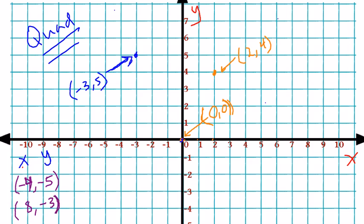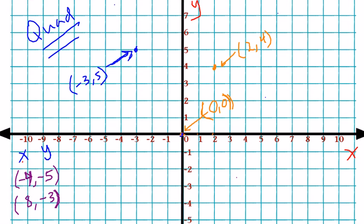For the ordered pair negative 4, negative 5, starting at the origin, we will move 4 units to the left because we're working with negative 4. Then 5 units down, because it's a negative 5. So this ordered pair would be negative 4, negative 5.